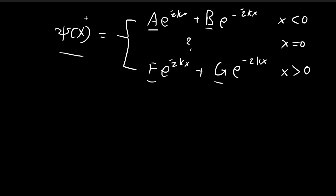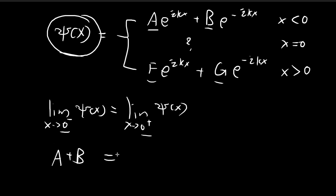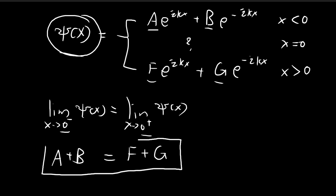We'll use the properties of psi(x) to find relationships among the unknowns. The first property is continuity of psi(x). Taking the left-hand limit as x tends to 0 from the negative side and the right-hand limit from the positive side, and substituting x = 0 (so each exponential becomes 1), we get A plus B on the left and F plus G on the right. So the continuity condition immediately gives us: A + B = F + G.